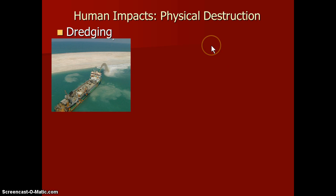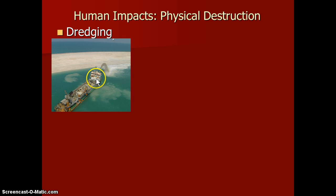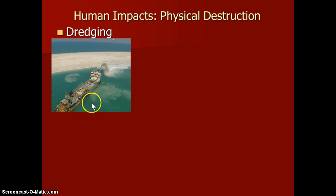One of the most obvious ways that our interaction with the ocean impacts the ocean is in physical destruction. There are many examples of this and we'll go over a couple here, one of which is dredging. We talked about how we dredge the bottom of the ocean because we collect the sands, the silts, the stones for all different purposes. Sometimes we're just clearing the sand and silt and stone out of the way because erosion and deposition has blocked a waterway that a boat needs to go through.